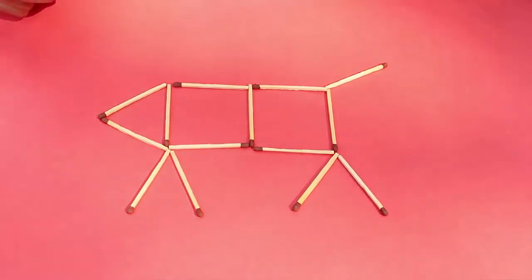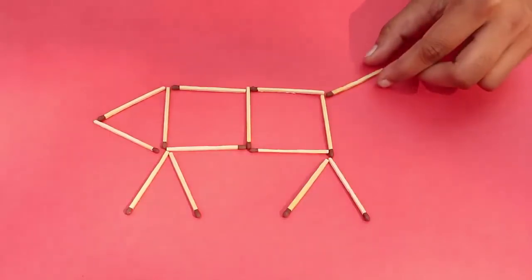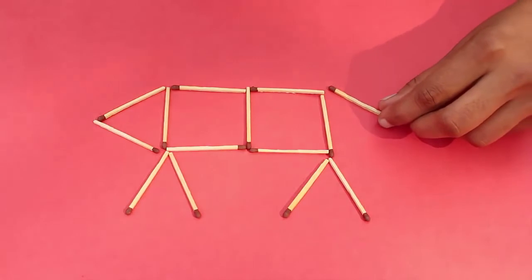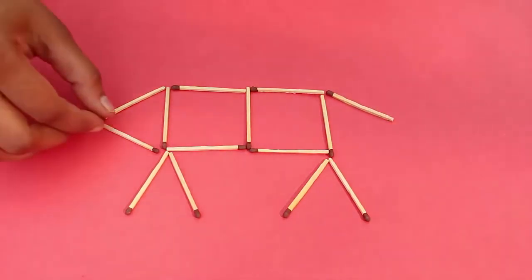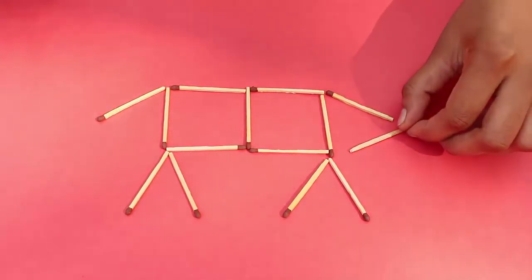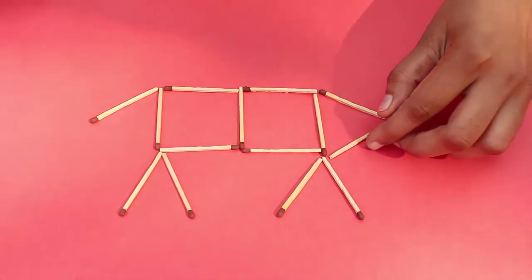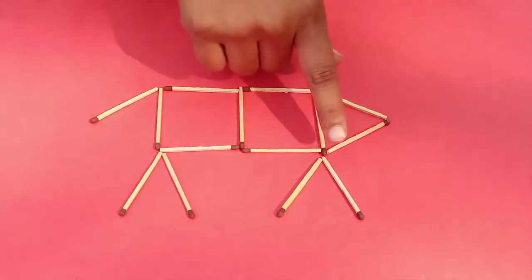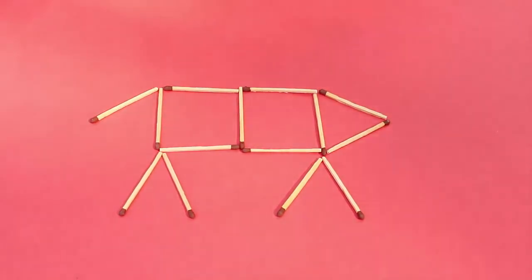It's quite easy. First, you move the right side matchstick lower and then place this one. And wow, the dog which was earlier facing left is now facing right. Hope you've enjoyed these very simple matchstick puzzles.